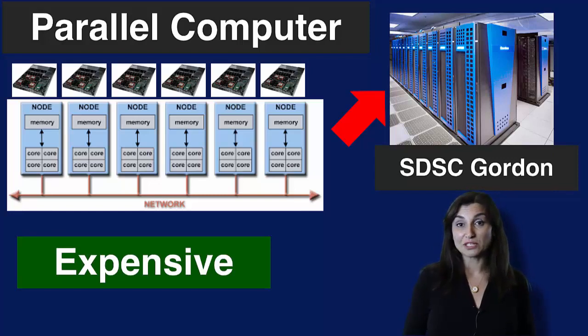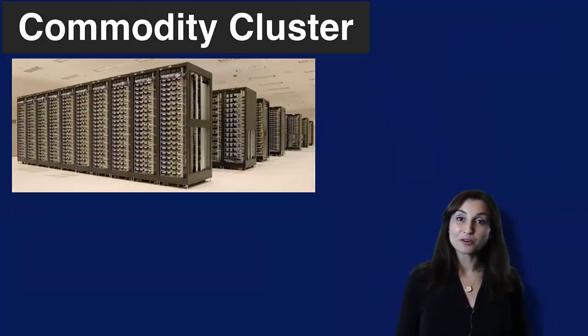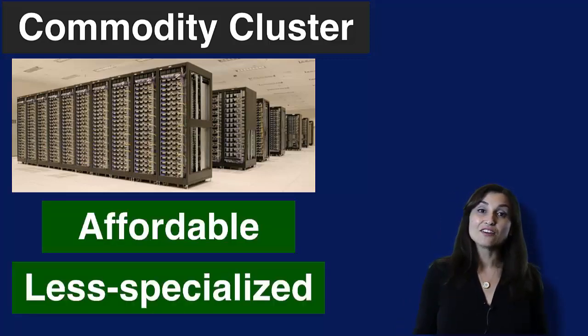This type of specialized computer is pretty costly compared to its most recent cousin, the commodity cluster. The term commodity cluster is often heard in big data conversations. Have you ever wondered what it exactly means? Commodity clusters are affordable parallel computers with an average number of computing nodes. They are not as powerful as traditional parallel computers and are often built out of less specialized nodes. In fact, the nodes in a commodity cluster are more generic in their computing capabilities.